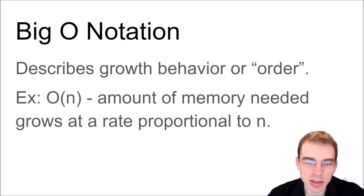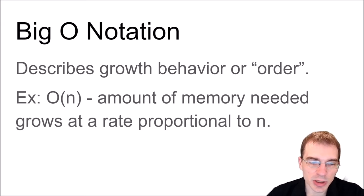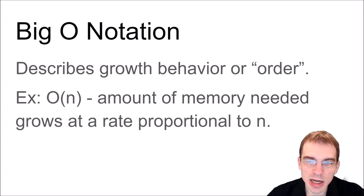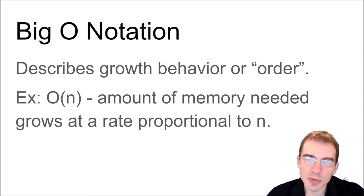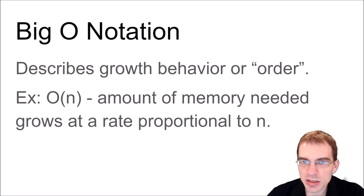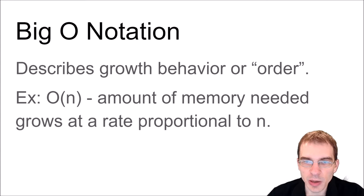Basically, what Big O notation does is it describes the growth behavior or order of a function based on the input size. It looks like a big O and then something related to n in parentheses. For example, we have O(n), or 'Big O of n'. That's basically saying the amount of memory needed will be growing at a rate proportional to n — every time the input size grows by one, the expected memory use also grows by one. So it's a straight one-to-one proportionality. And when we're talking in terms of Big O, we're usually interested in looking at worst cases, so Big O puts a rough upper bound on the amount of memory we're going to be using.